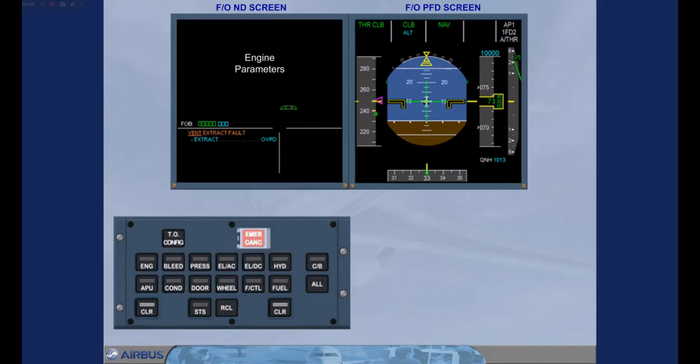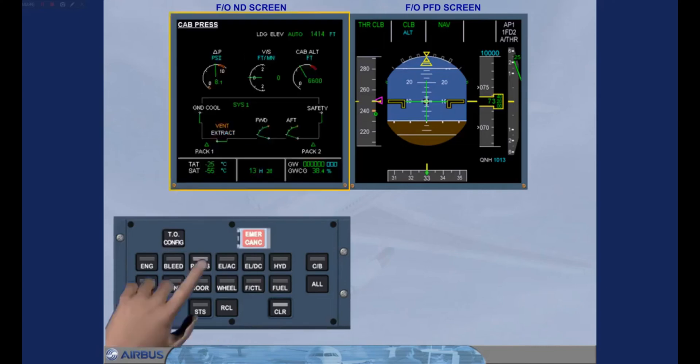By looking at the underlying system title, you can see which system page needs to be viewed. In this example, the PRESS page push button should be selected and held on the E-CAM control panel. The system page can then be studied to provide more information about the failure.